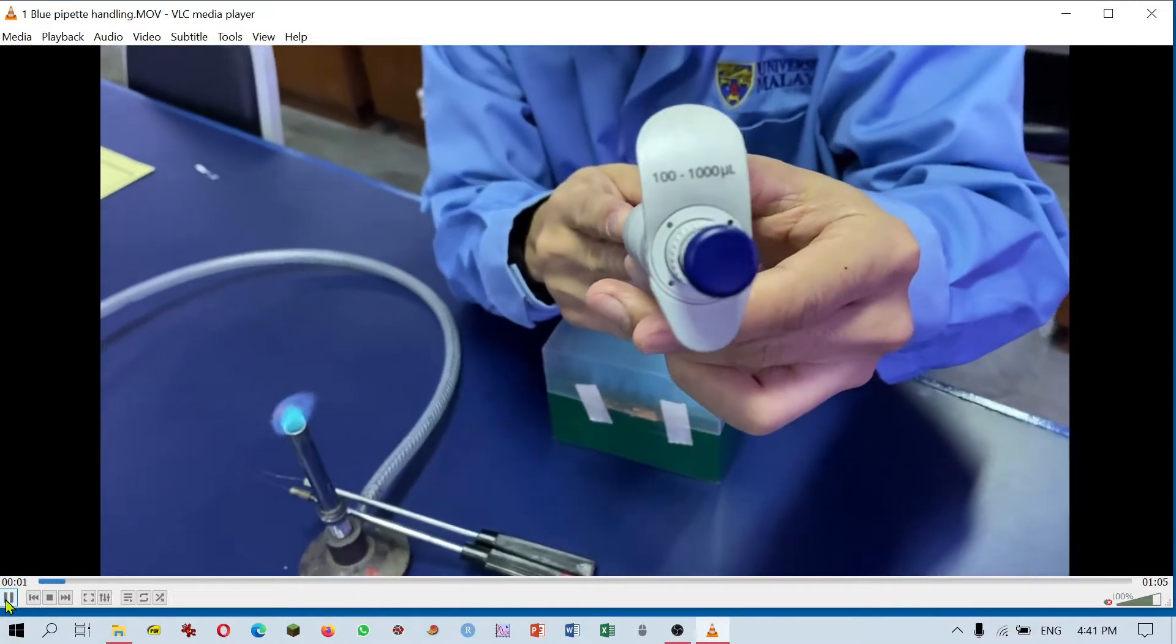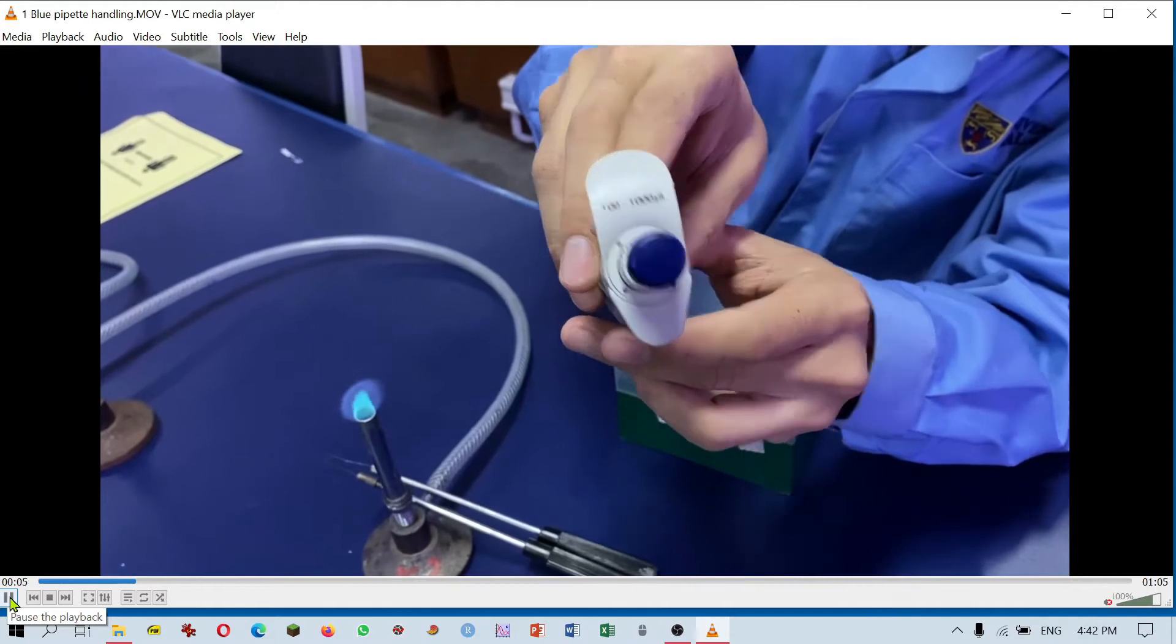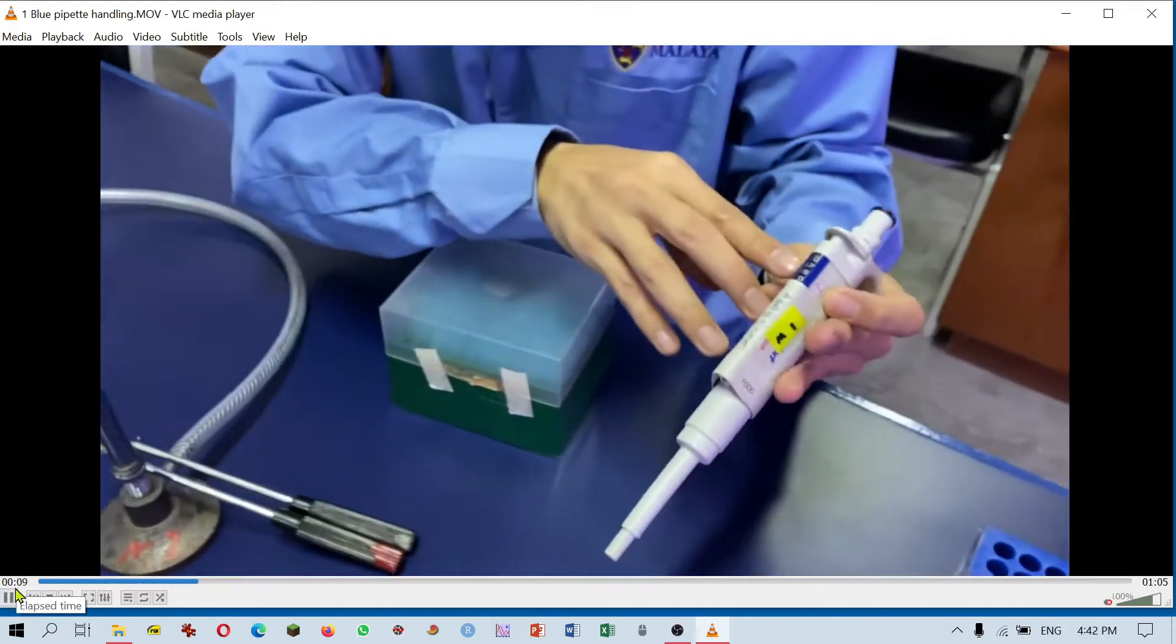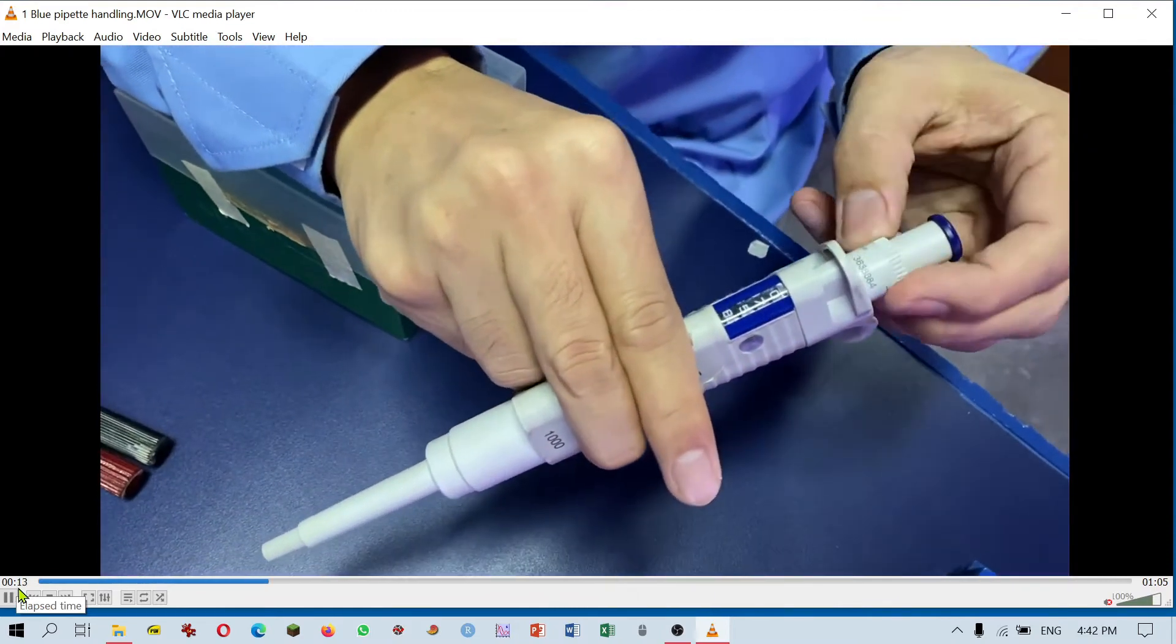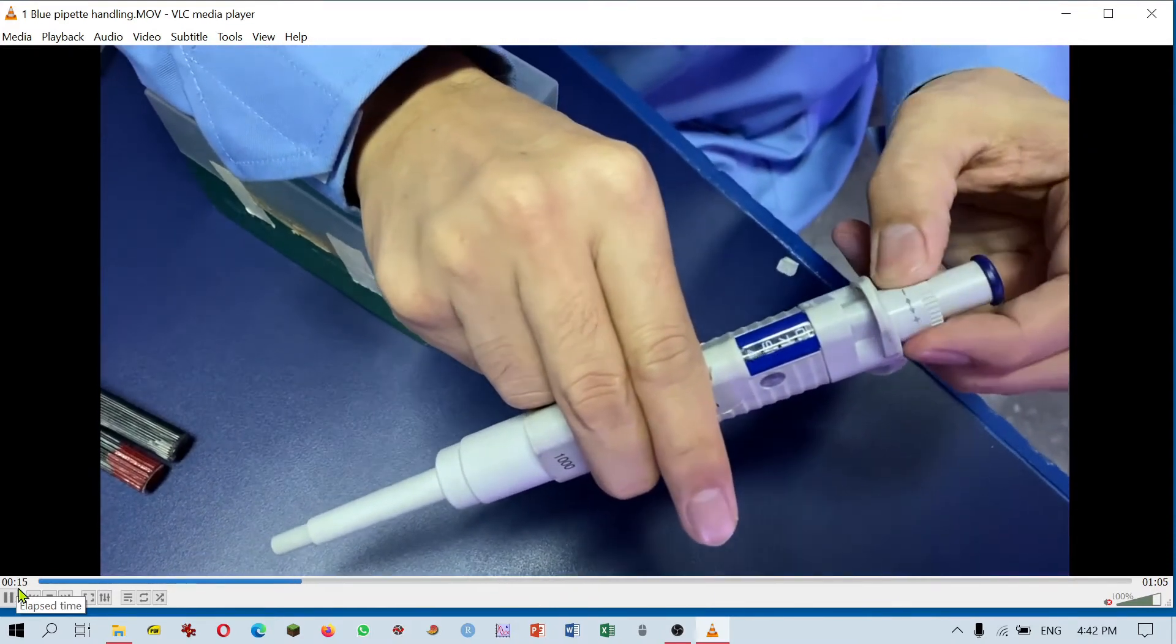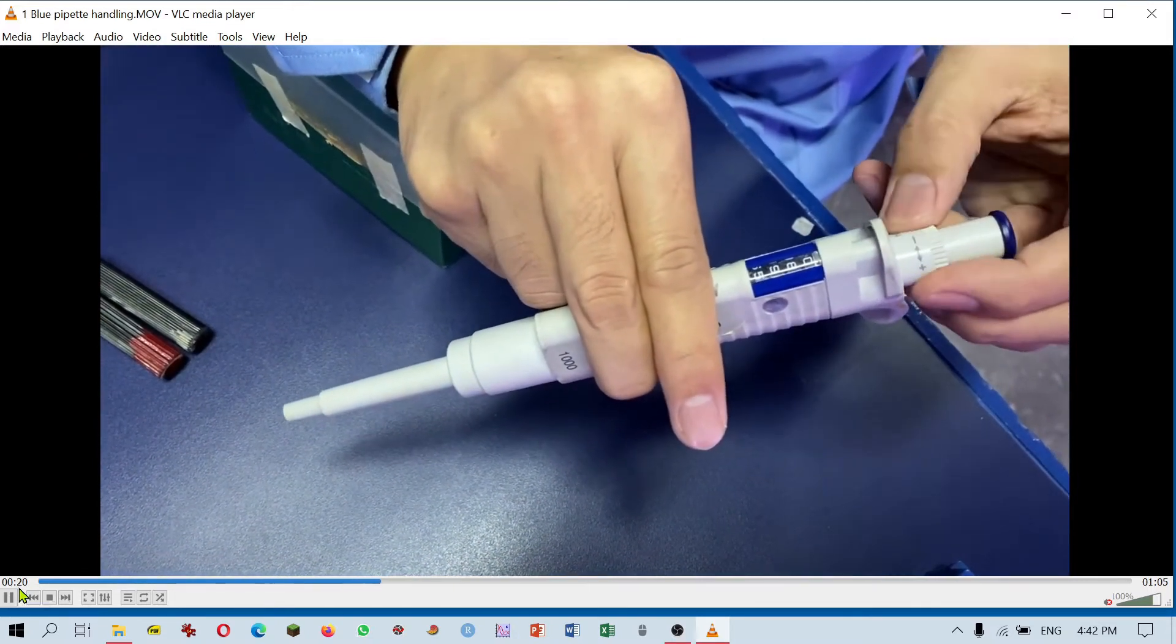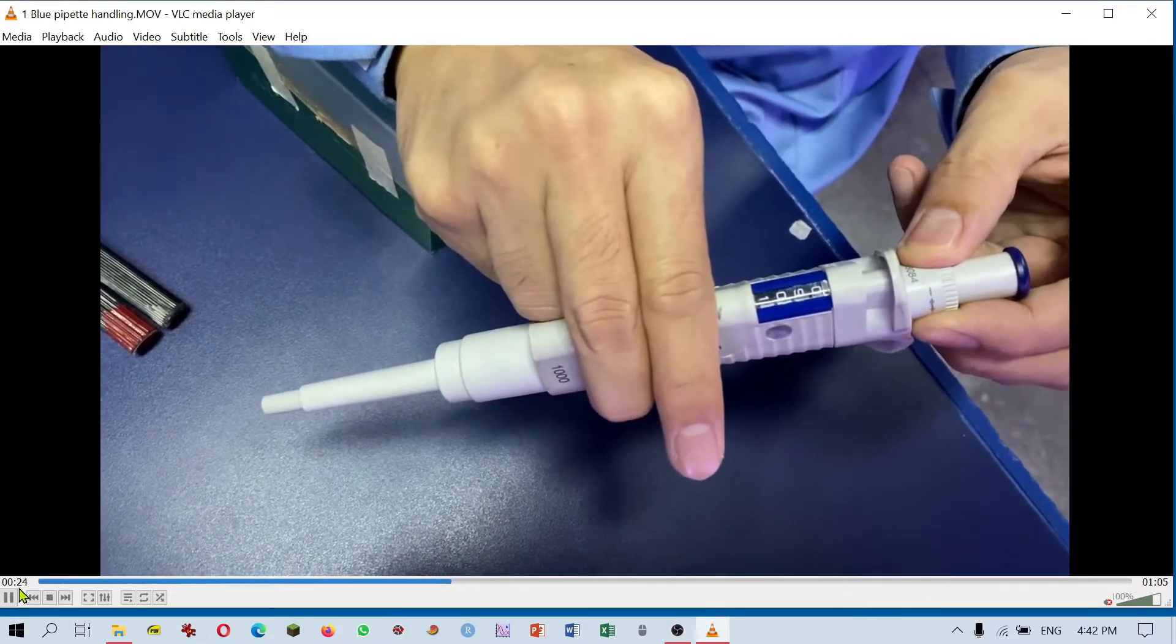This is the blue pipette with a volume range of 100 to 1000 microliters. You can see the numbers here that indicate up to 1000 microliters, so we're setting it to about 900 microliters.